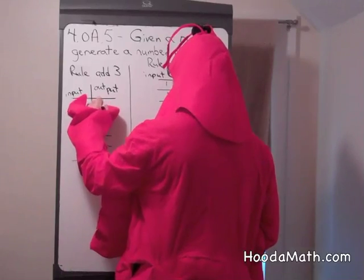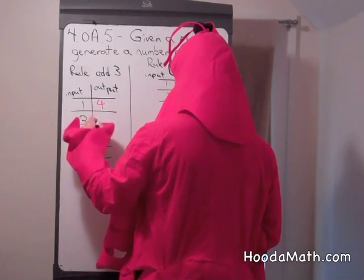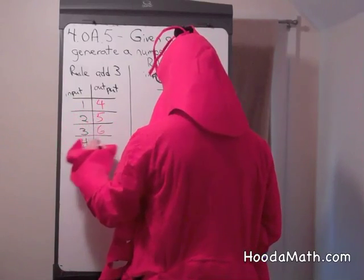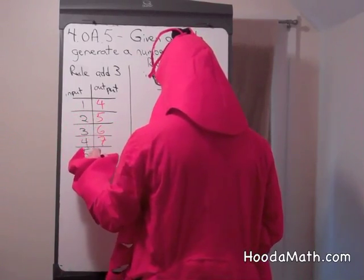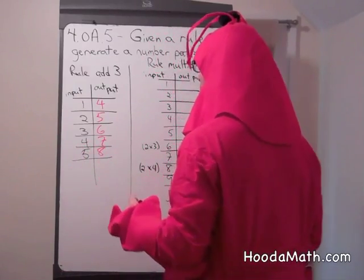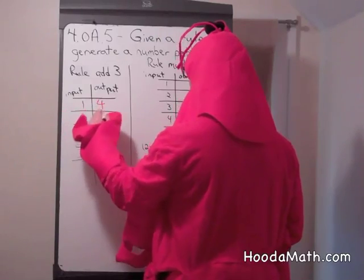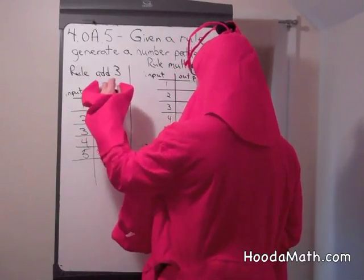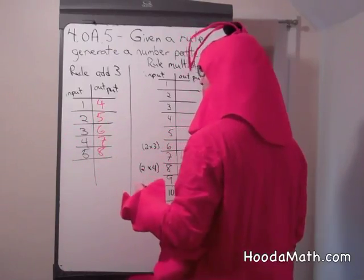Well, we get 3 and 1, 3 and 2, 3 and 3, 3 and 4, 3 and 5. If you notice, when we add 3 to an odd number, we get an even number. And when we add 3 to an even number, we get an odd number — we're getting even, odd, even, odd.